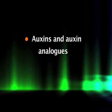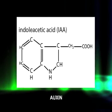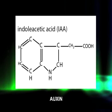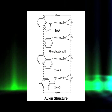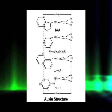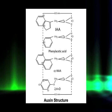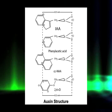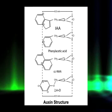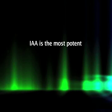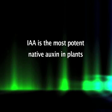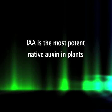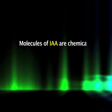Structurally, auxins are a diverse group of compounds with at least an aromatic ring and a carboxylic acid group. A common feature of all active auxins is a molecular distance of 0.5 nanometers between a fractional positive charge on the aromatic ring and a negative charge on the carbonyl group. The majority of auxin effects in intact plants are mediated by IAA, which is the most potent native auxin in plants.